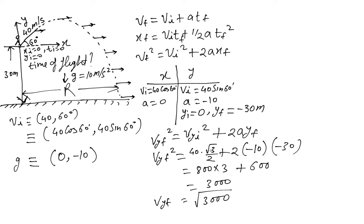Now, once you have Vyf, you can use Vyf in this equation to find out the time. How to do that? Let's rewrite the same equation in terms of the variables we have been using. Vyf equals Vyi plus a tf. What is Vyf? We just calculated. It's root 3000. What is Vyi? Well, you see Vyi is pointing in the y direction and is positive. So it's 40.